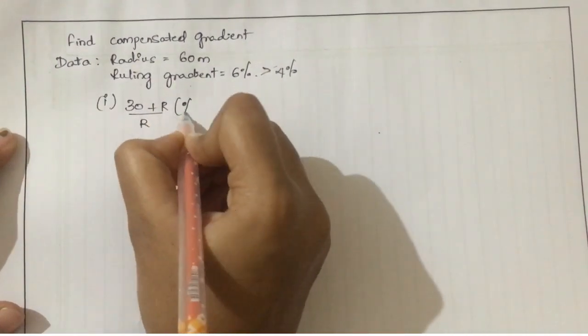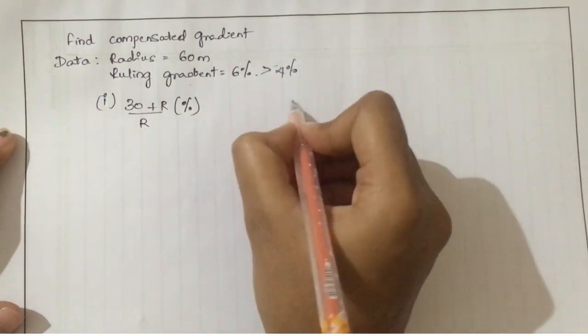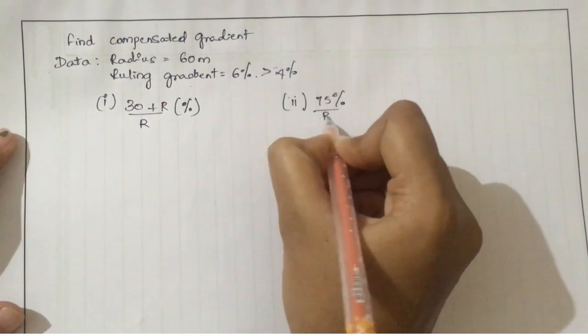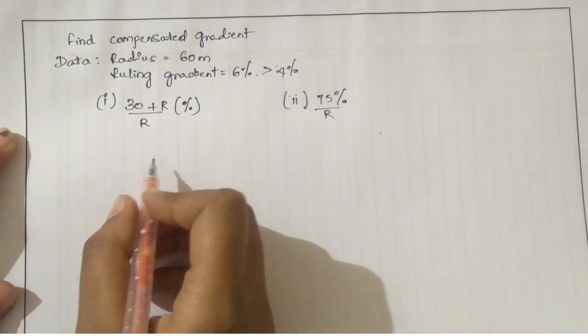For that we have two formulas: one is (30 + R)/R which will give the result in the form of percentage, and the other formula is 75/R. We will take the minimum of the two.